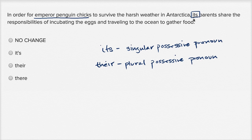So in order for Emperor Penguin Chicks, we're talking about many things to survive the harsh weather in Antarctica. Their parents share. So this is going to be their. Parents share the responsibilities of incubating the eggs and traveling to the ocean to gather food. So that's this choice right over here.